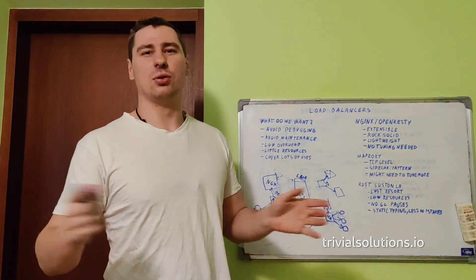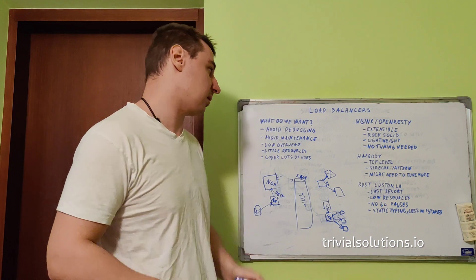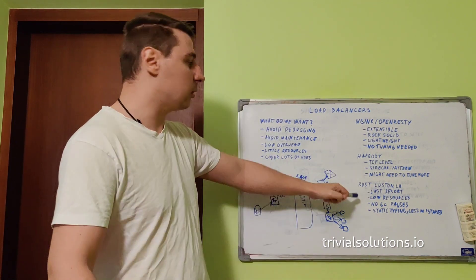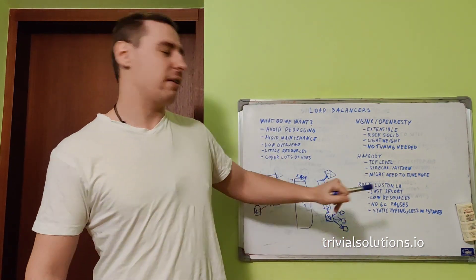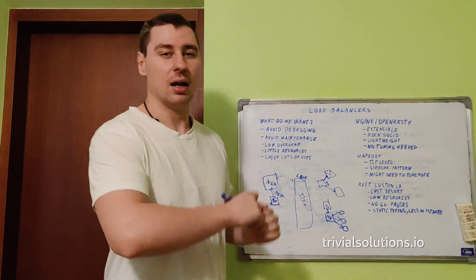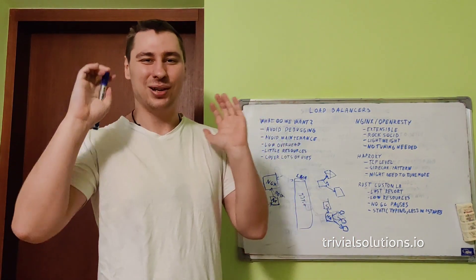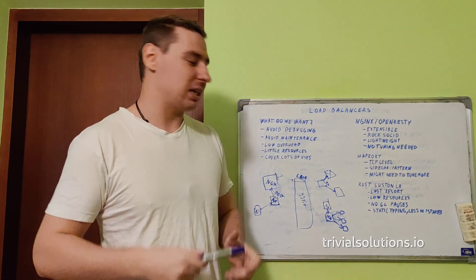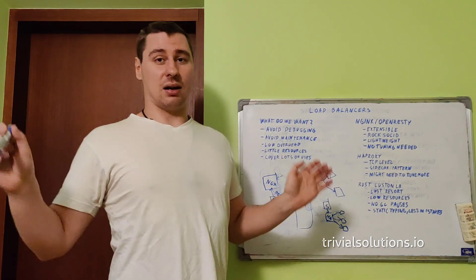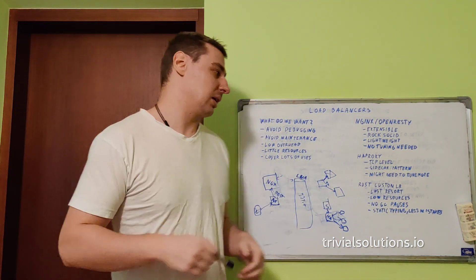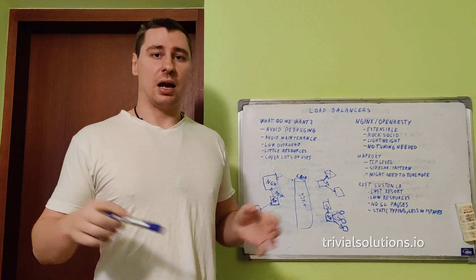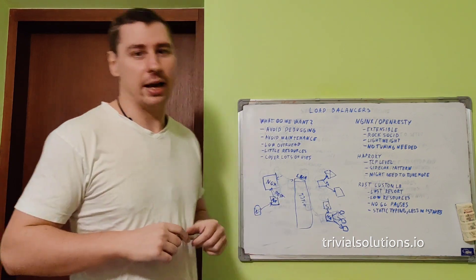From these three options I think we've covered every load balancing use case under the sun. My preference order: OpenResty/Nginx for HTTP, HAProxy for TCP, and only as an absolute last resort do I write a custom Rust load balancer. Do not do that if you don't have to — don't waste your time if these battle-tested options already exist. If you have any tips or suggestions, feel free to leave them in the comments. This has been David from Trivial Solutions.io — signing out, peace.